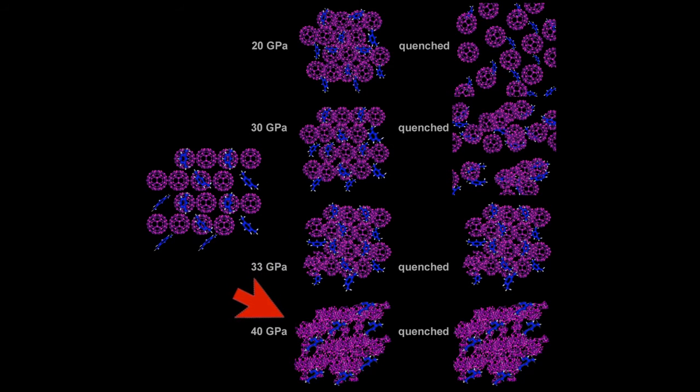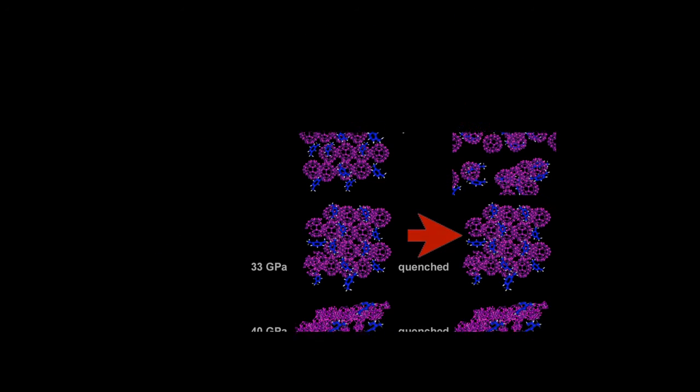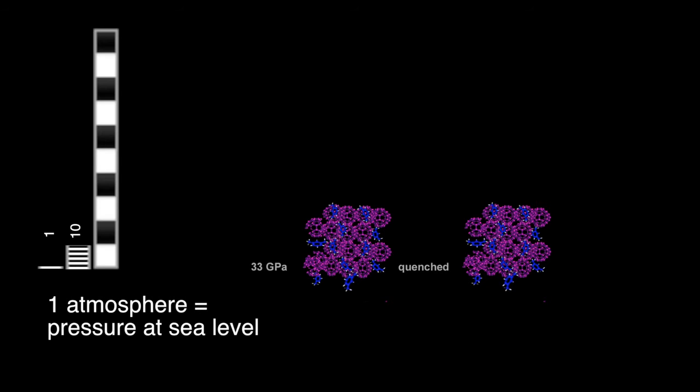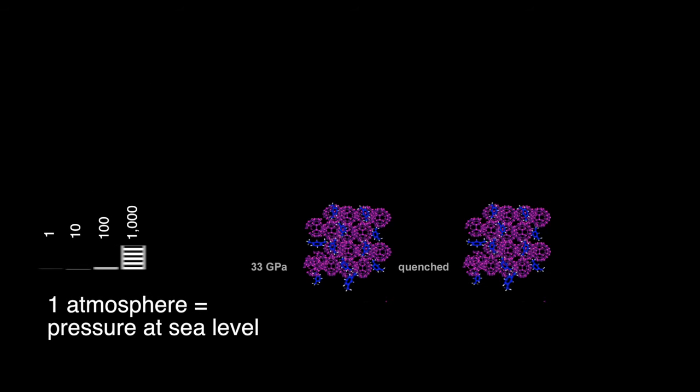However, the amorphous clusters still occupied their original sites, forming a lattice structure. The team discovered that there is a narrow window of pressure, about 320,000 times the normal atmosphere, under which this new structured carbon is created and does not bounce back to the cage structure when pressure is removed.